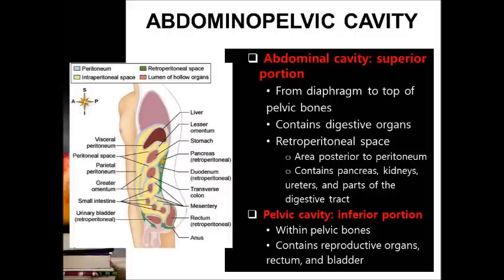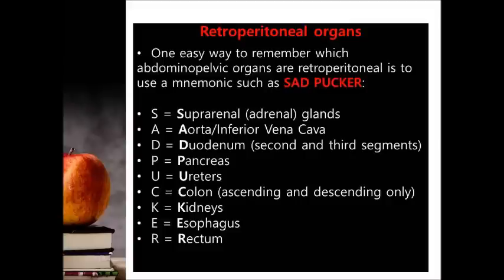Let me add some information about the abdominopelvic cavity. The abdominal cavity is located from the diaphragm to the top of pelvic bones and contains many digestive organs. Within the abdominal cavity, there is a retroperitoneal space, which is the space posterior to the peritoneum. The pelvic cavity is within the pelvic bones and contains the bladder and reproductive organs. Here is the list of retroperitoneal organs — you can use the mnemonic 'said pucker' to make it easier.